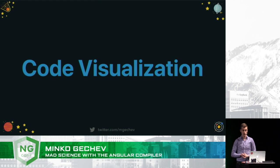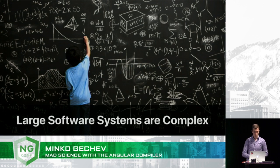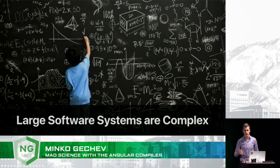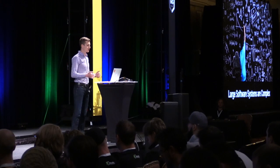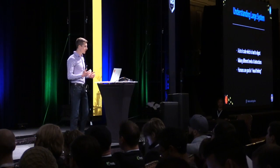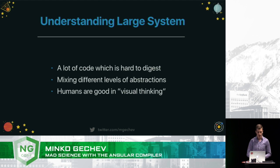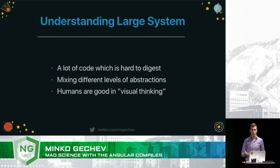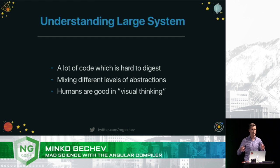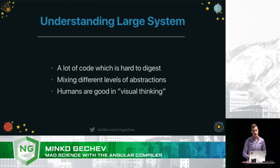Now let's talk about source code visualization. Let's suppose that we're new to some huge project. We have a large Angular application being developed by a big team, and we're just hired to start working on it. In order to get on track as quickly as possible, we need to usually read the entire source code, but this is going to be very hard to digest. Also, the different modules inside of this application are on different levels of abstraction. In order to apply some more systematic way of exploring the code — for instance, top-down or bottom-up — we need to figure out how they're located and sort them out by their level of abstraction and apply this strategy.